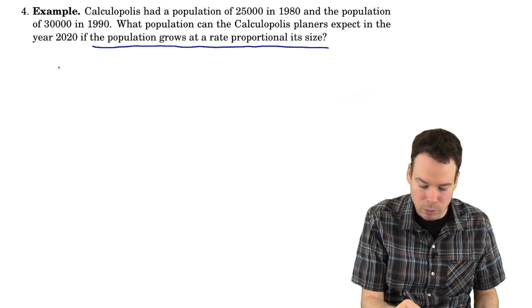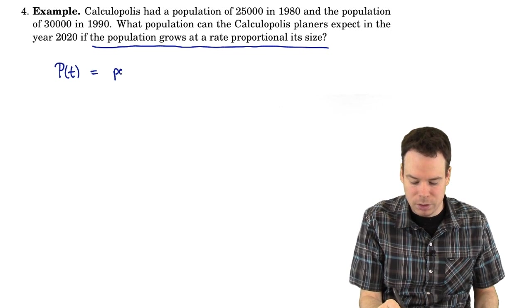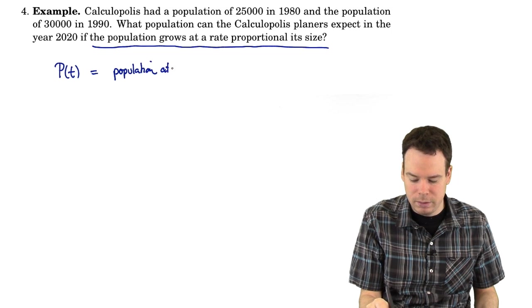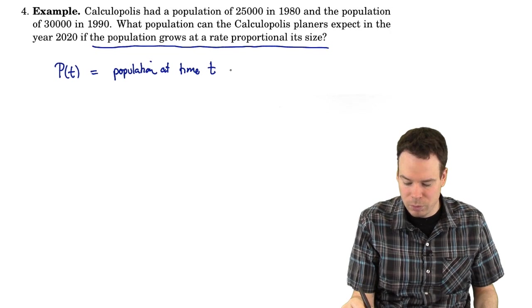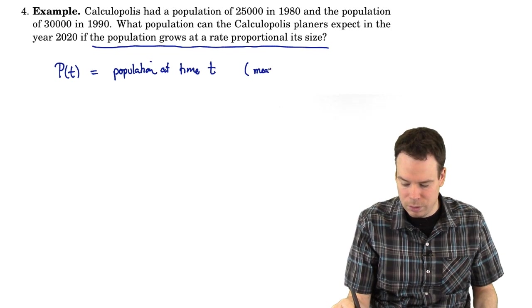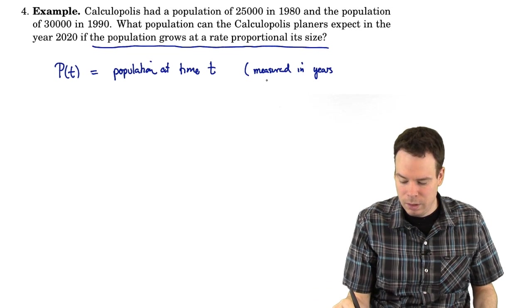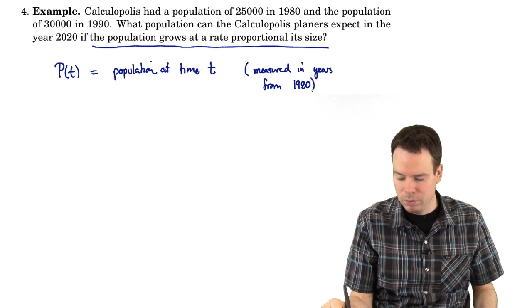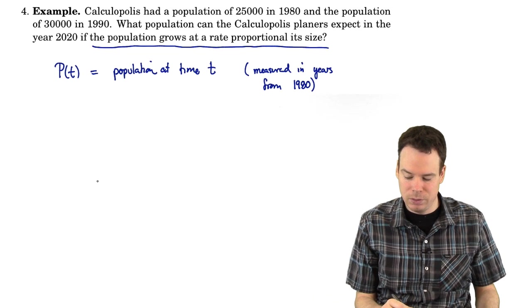Let's collect what we know about the population. I'll let P be the population at time t, and since we're dealing with 1980, 1990, we're going to let this be years. So time is measured in years, and we might as well just measure it from 1980. So t equals 0 would be 1980, t equals 10 would be 1990.